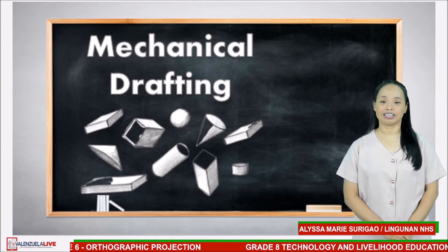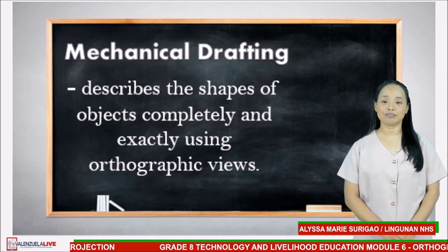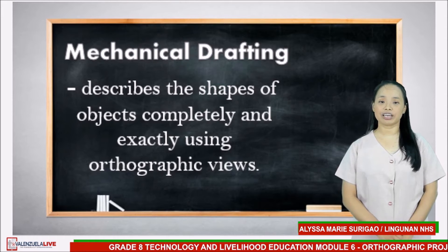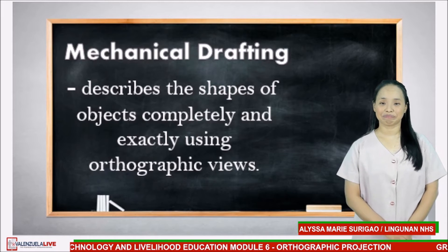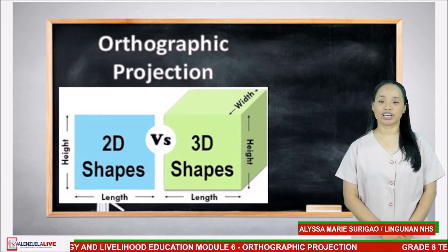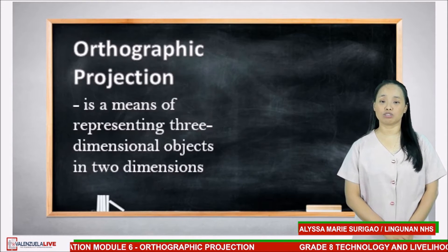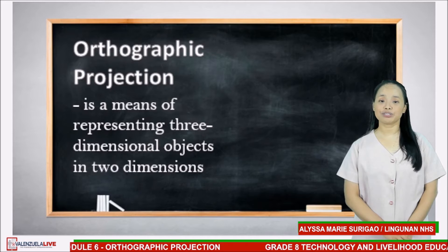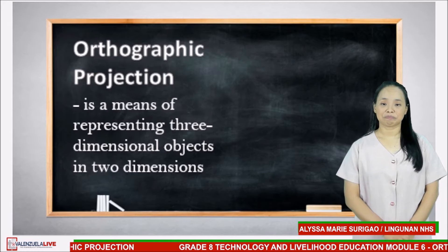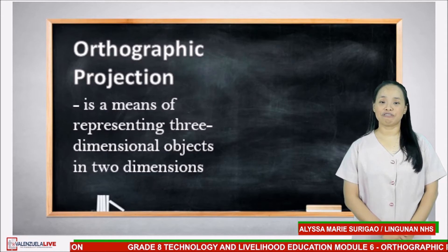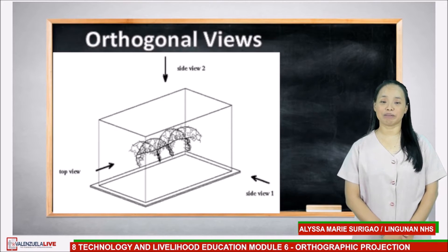Mechanical drafting describes the shapes of objects completely and exactly using orthographic views. Many different types of projections are used in the presentation of mechanical drawings. Orthographic projection is a means of representing three-dimensional objects in two dimensions. It is also the representation most used by engineers. Orthogonal views provide a means for describing the exact size and shape of an object.